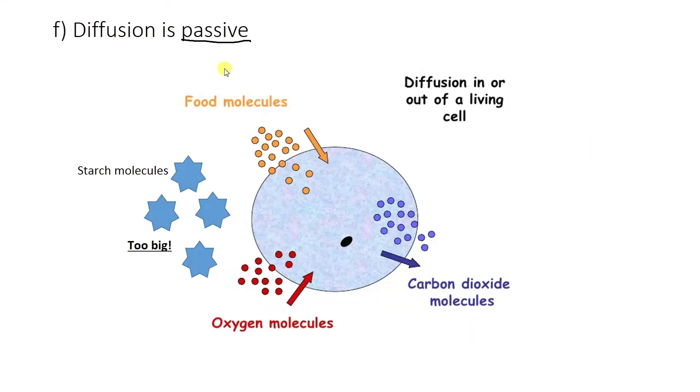So one thing you need to know about diffusion is that it's passive. That means that no energy is used for this movement. Normally when we run or walk, we need to burn energy to do that. Diffusion doesn't need energy to happen. Other ways do, but this one doesn't. It just happens passively. It's all about that gradient from high to low concentration.